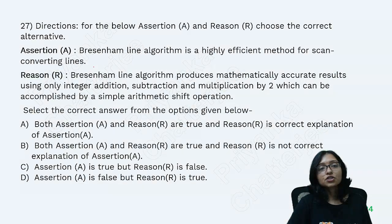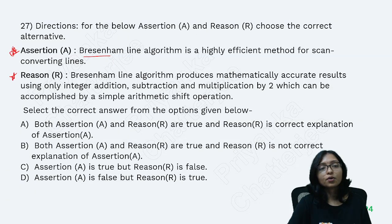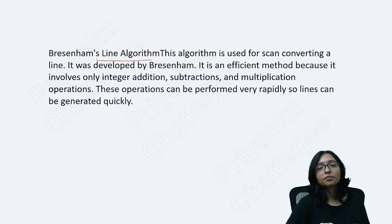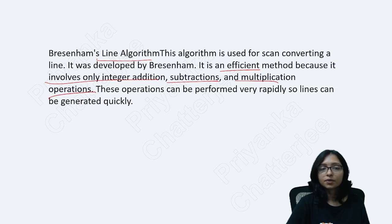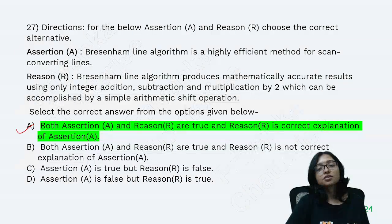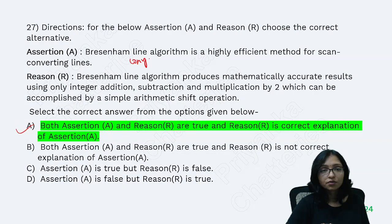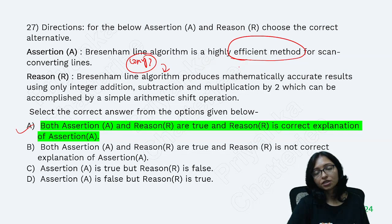Here is an assertion-reason question on the Bresenham algorithm, which is also a popular question type. The answer is that both the assertion and reason are true and the reason is the correct explanation, because the Bresenham algorithm is most efficient as it involves only integer addition, subtraction, and multiplication operations. Always ask yourself why — that confirms it is the correct explanation.